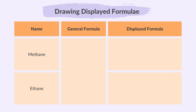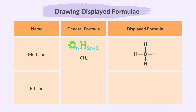If given the name, we must also be able to draw the displayed formula of an organic compound. For example, methane and ethane. For methane, the name includes meth, which indicates it has only one carbon atom. The name ends with an, so we know it belongs to the alkane family, which means it has only single bonds. Using the formula for alkanes CnH(2n+2), where n is the number of carbons, and setting n equal to 1, we get CH4. So the displayed formula of methane would look like this. The same applies for ethane, where it has two carbon atoms, so the displayed formula will look like this.